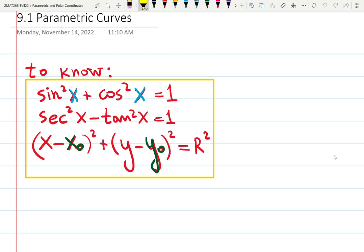And then what's the last one, do you know? x minus x sub 0 squared and y minus y sub 0 squared, and together get r squared. What is that? Good job, people know.